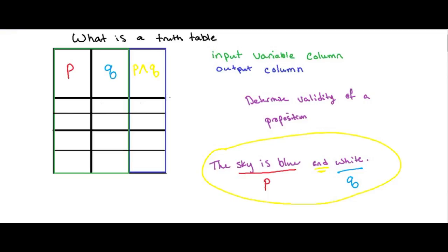So in other words, the sky is blue can be either true or false. The sky is white also has a truth value. It can be either true or false.